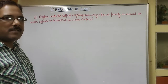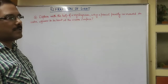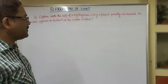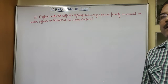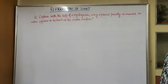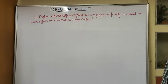Good morning students. Last class we discussed the characteristics of refraction. The first characteristic: when a ray of light passes from a rarer medium to a denser medium, it bends towards the normal. The second characteristic: when a ray of light is incident normally at the interface of two media, it passes straight through and no refraction takes place.